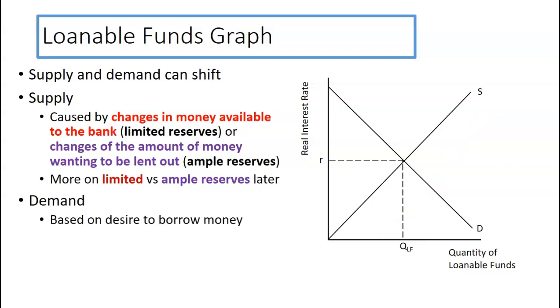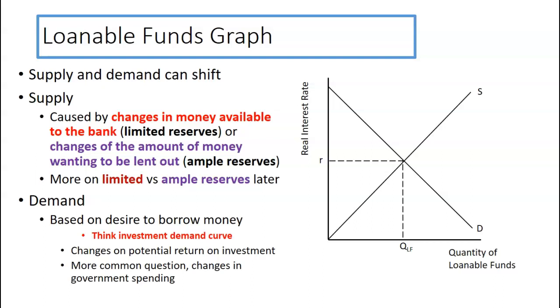The demand curve is based on the desire to borrow money. So what can shift this? Think of the investment demand curve. Is there a change to return on investment, change to acquisitions, change to legislation for using green energy, therefore you get a tax break, whatever. So is there a change of potential return on investments? Or what we're going to come across more is if the government spends more money. More about that on the next slide.